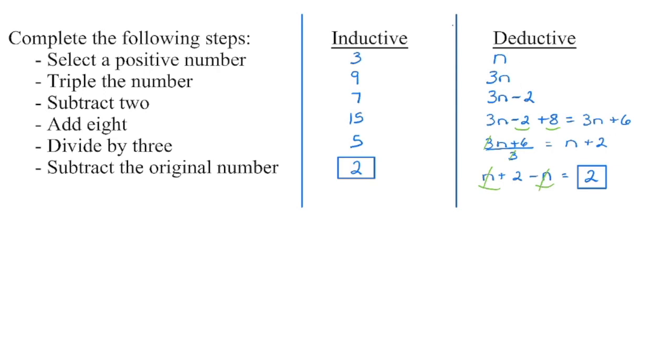Let's try to set this up deductively. My positive number, I chose n to represent that value. We're going to triple it. We're going to multiply by three. From that statement, we're going to subtract two, and then we're going to add eight. Now you do have like terms here you need to combine. So negative two plus eight gives me positive six. We're going to divide that entire statement by three. So remember you have to divide each term by three. So three n divided by three leaves me with one n, and then six divided by three gives me two. And then from that statement, we're going to subtract our original number, which we represented with that n. So again, I'm going to combine my like terms. n minus n is zero n, and we are left with two.